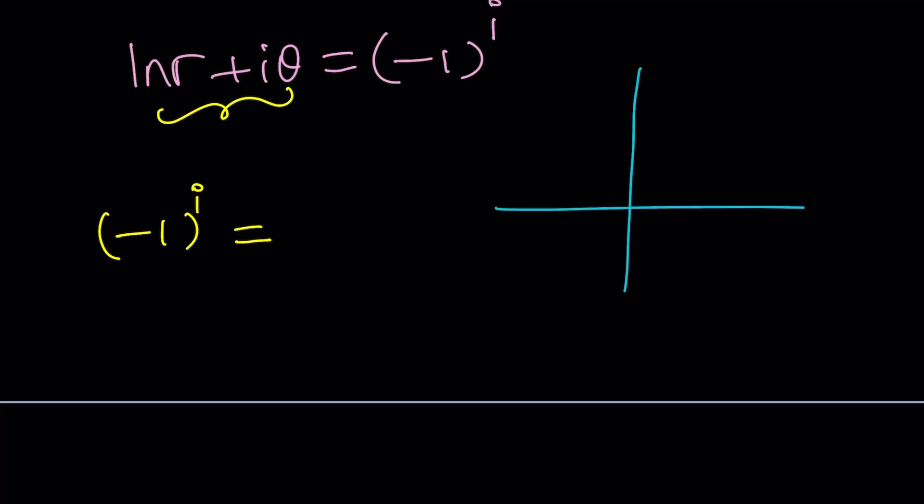To complexify negative one, we're going to consider what's called the argand plane. And on the argand plane, we have a real axis and an imaginary axis. And numbers can be expressed like vectors or points on the coordinate system. Negative one would be corresponding to negative one plus zero i. In other words, its imaginary part is zero because it is real.